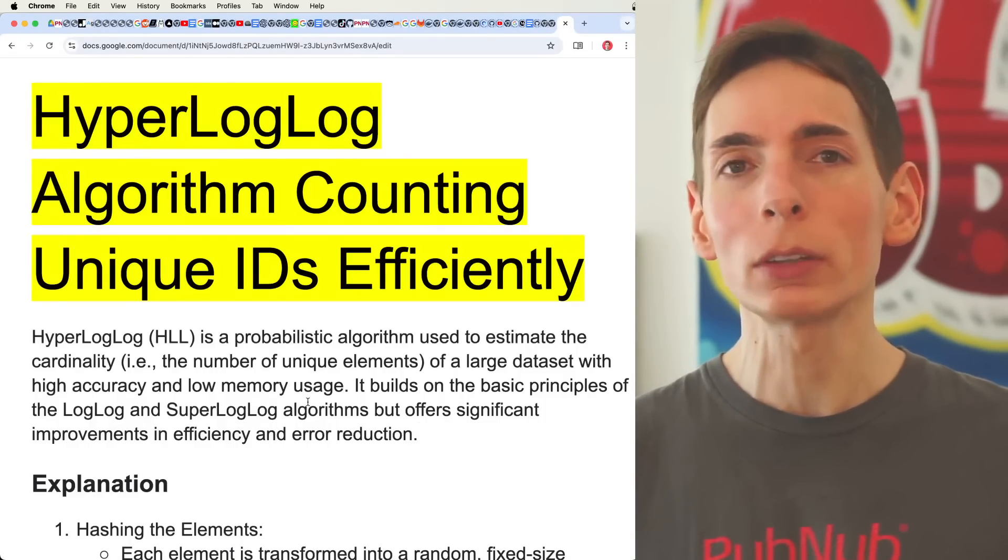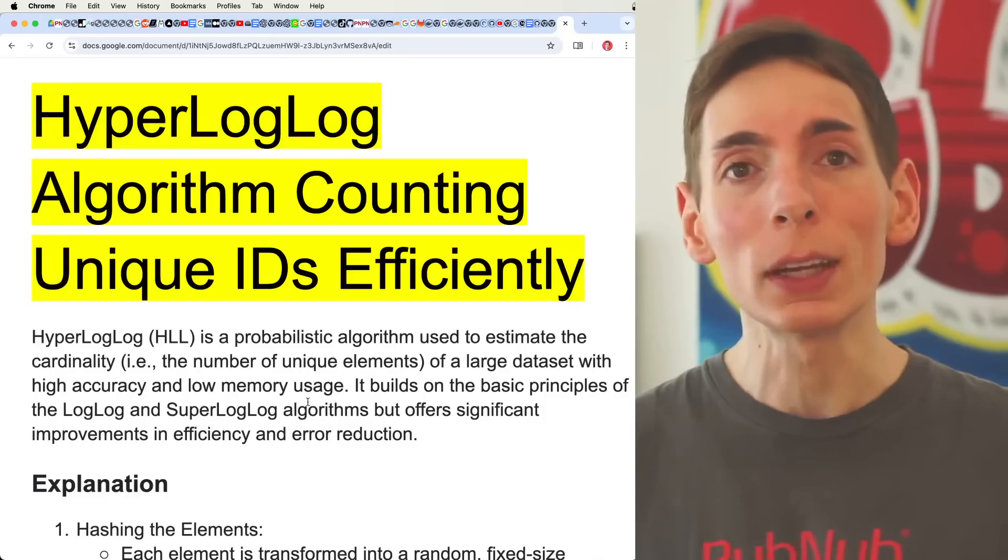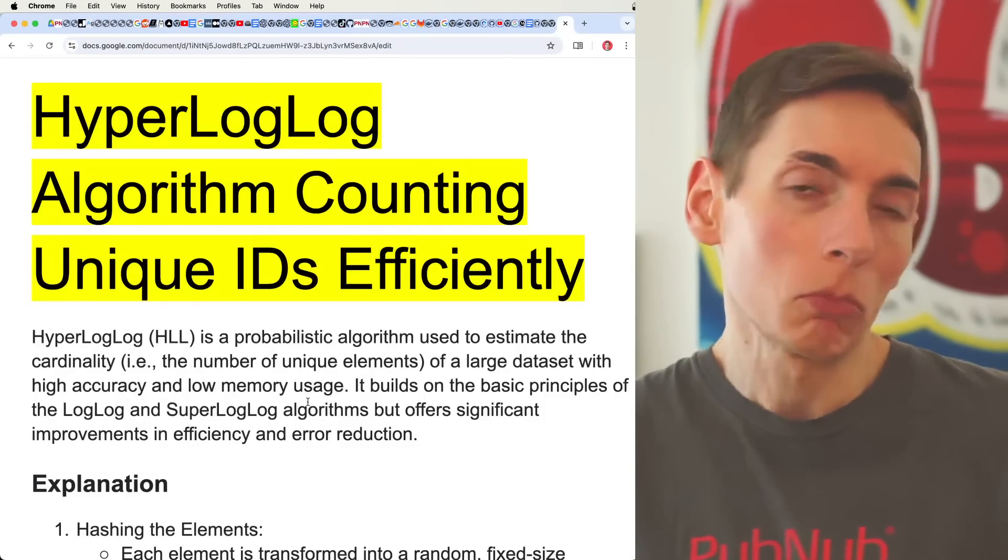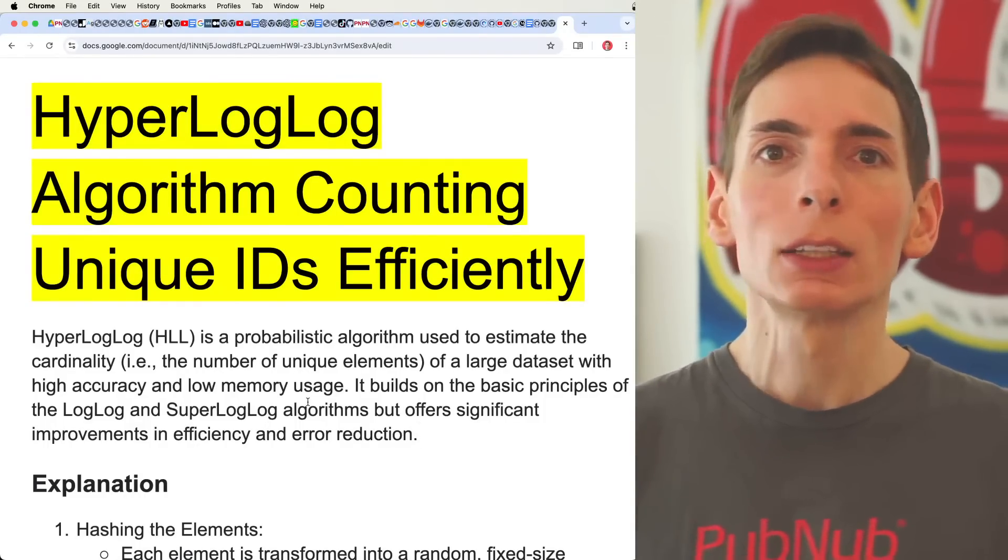So for example, you don't want to use HyperLogLog if you're counting a small number of things. Anything below a million, maybe 10 million.